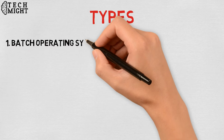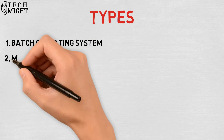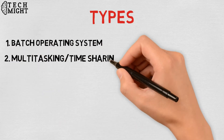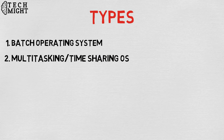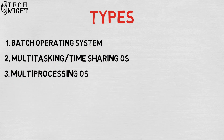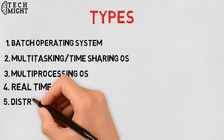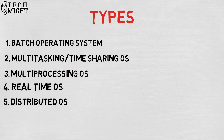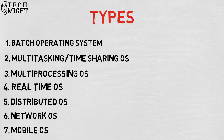Types of operating system: 1. Batch operating system. 2. Multitasking or time-sharing operating system. 3. Multiprocessing operating system. 4. Real-time operating system. 5. Distributed operating system. 6. Network operating system. 7. Mobile operating system. We will discuss all these types in detail in another video.